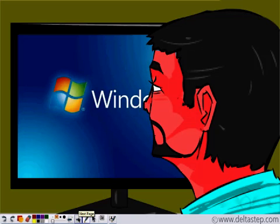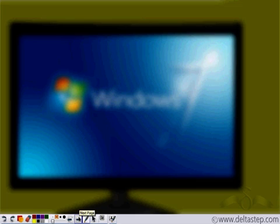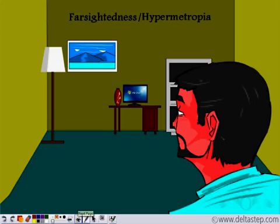Now another condition arises in people after forty years when near objects seem hazy and blurry. This condition when far objects are clear but near objects are hazy and blurry is known as farsightedness or hypermetropia.